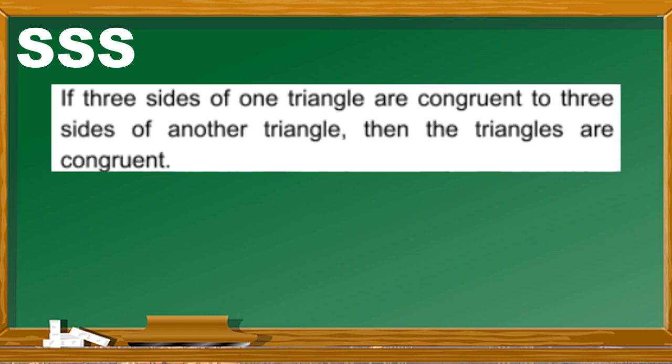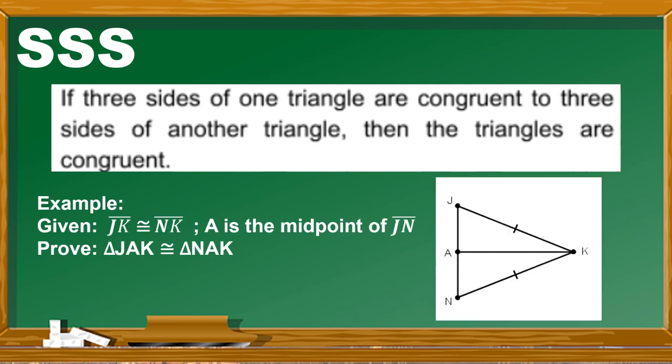For our example for this postulate, the given is: segment JK is congruent to segment NK, and A is the midpoint of segment JN. We need to prove that triangle JAK is congruent to triangle NAK. We have an illustration on which we will base all our statements and reasons in our proving.